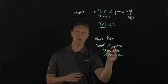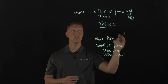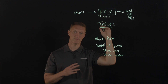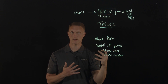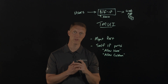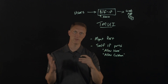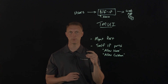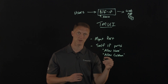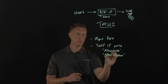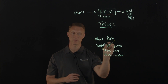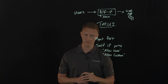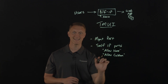When you use 'Allow Custom,' make sure that you do not choose ports that are in use by the configuration utility. The configuration utility uses TCP port 443 in most cases, or TCP port 8443 on some later versions of Big-IP VE. So if you do have to allow custom on Self IP ports, make sure you do not allow TCP ports 443 or 8443.